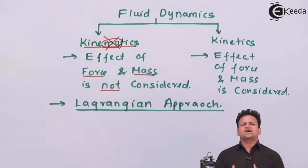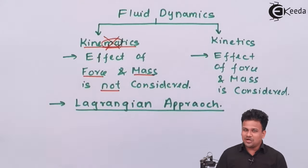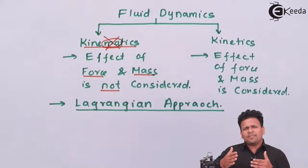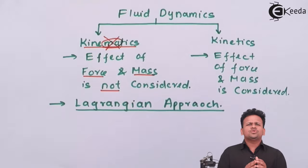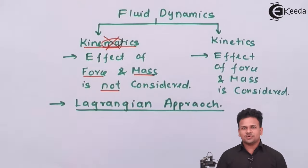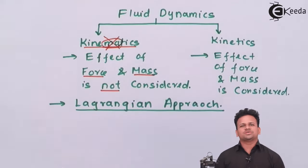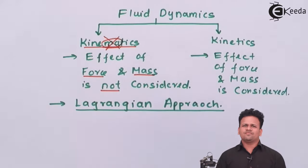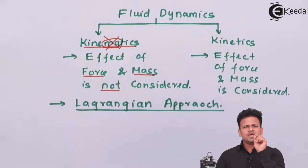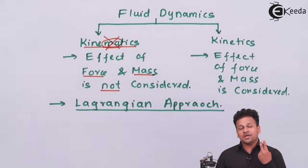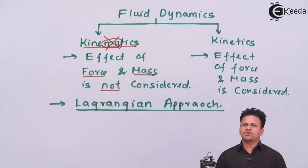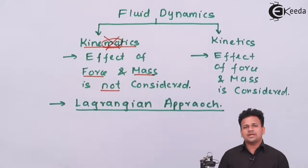In the Lagrangian approach, imagine you are running a marathon with a cell phone attached to your arm. At each instant of time it calculates your displacement, velocity, and acceleration. During the entire marathon you do not run at constant velocity — your velocity increases or decreases — and all of that is recorded. Similarly, in the Lagrangian approach we consider each molecule of the fluid in motion and calculate the displacement, velocity, and acceleration of each fluid particle.